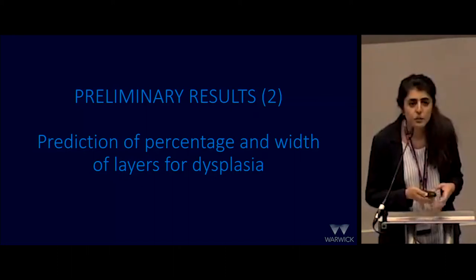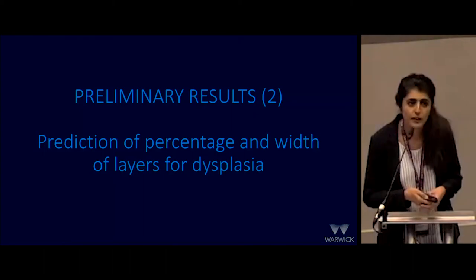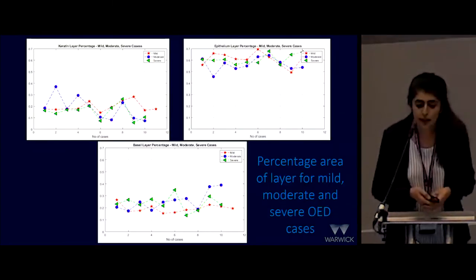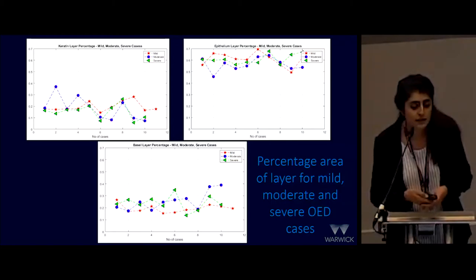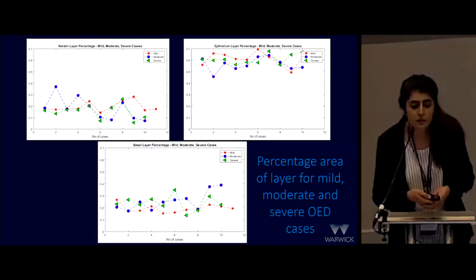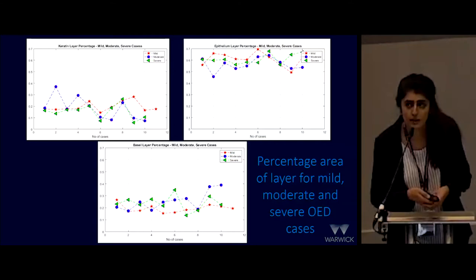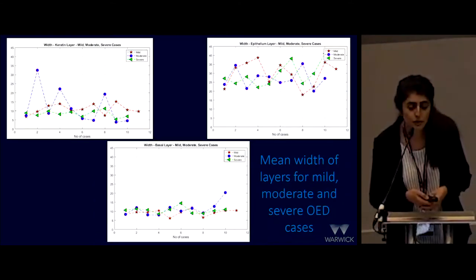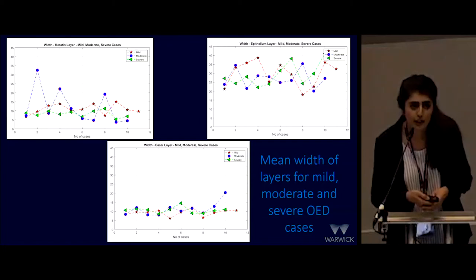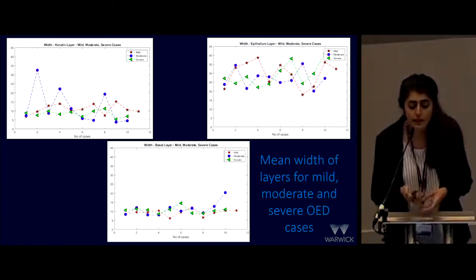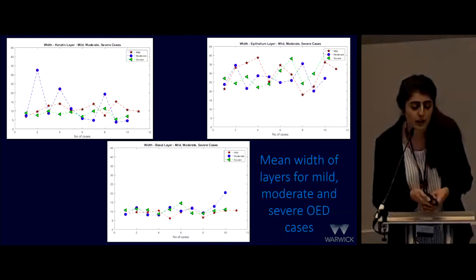Next, we'll look at the prediction of the percentage area and the width of each of these layers for each grade of dysplasia. You can see from these scatter graphs the keratin layer, epithelium, and basal layer for mild, moderate, and severe dysplasia cases. For both moderate and severe dysplasia, the basal layer percentage area was greater than for mild dysplasia. In some moderate dysplasia cases, the keratin layer also had a greater percentage area. Similarly, the mean width — calculated from the medial axis of the layer — was greater for the basal layer in moderate and severe cases, consistent with architectural features such as formation of rete pegs and loss of epithelial cohesion.